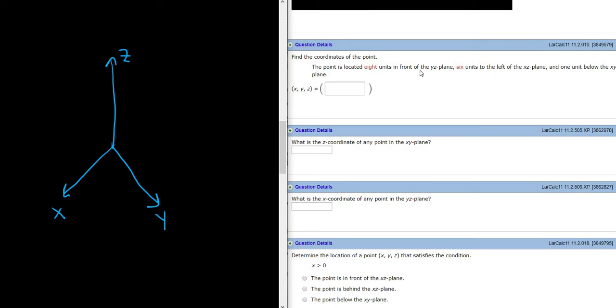So 8 units in front of the YZ plane. So this here is the YZ plane. So behind it would be the negative X axis. In front of it would be the positive X axis. So 8 units in front means that X is 8. So our first component is 8.